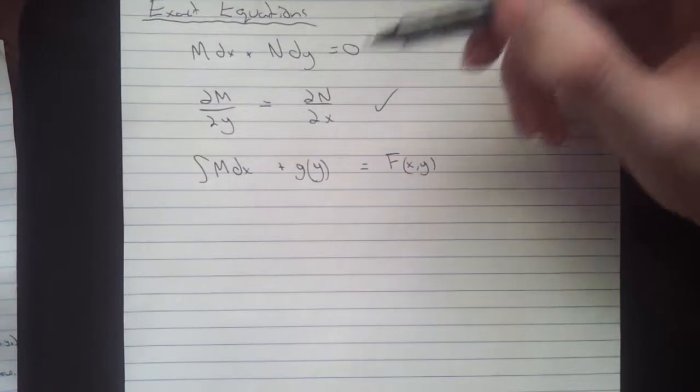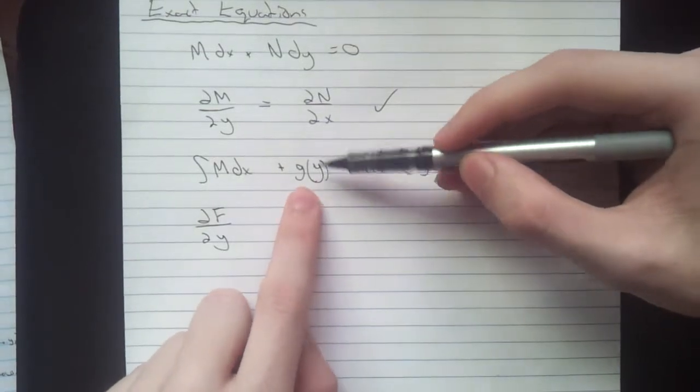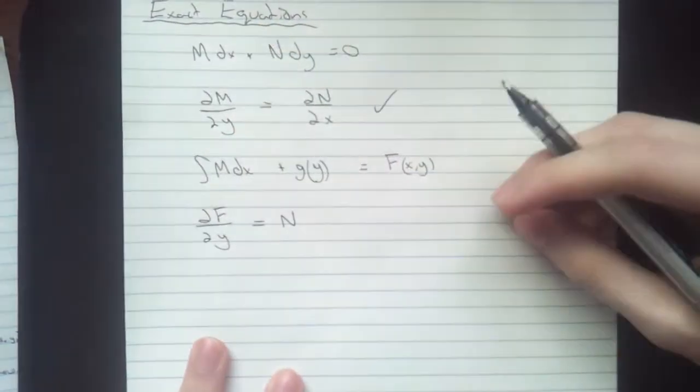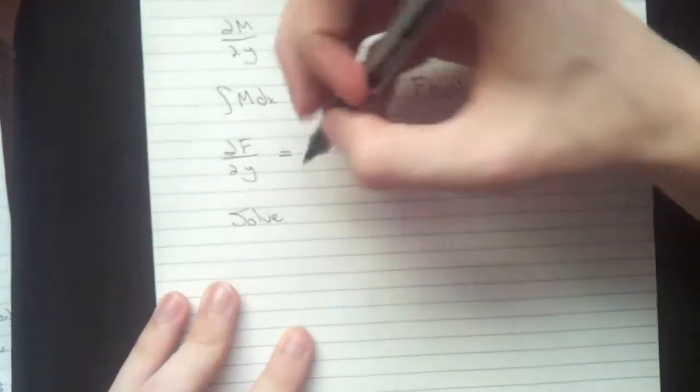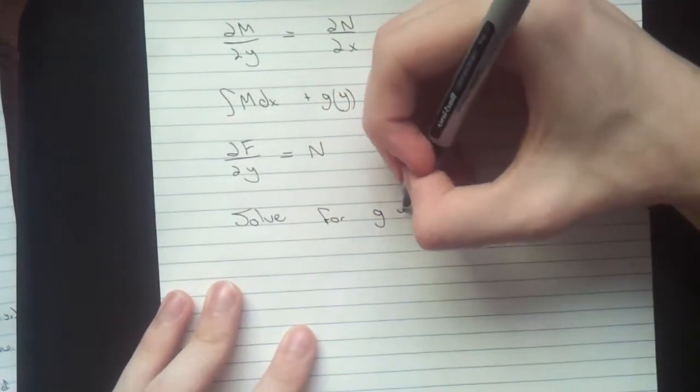Next up, after you've done that, you're going to take ∂F/∂y of this whole thing. So including this, you're going to end up with a g prime of y. And then you're going to set that equal to N. And now, then after you do that, you want to solve that equation for g of y.